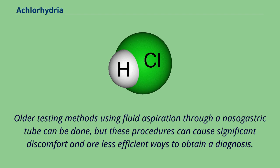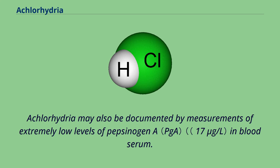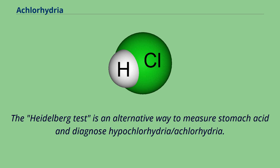Older testing methods using fluid aspiration through a nasogastric tube can be done, but these procedures can cause significant discomfort and are less efficient ways to obtain a diagnosis. A complete 24-hour profile of gastric acid secretion is best obtained during an esophageal pH monitoring study. Achlorhydria may also be documented by measurements of extremely low levels of pepsinogen A in blood serum, and the diagnosis may be supported by high serum gastrin levels. The Heidelberg test is an alternative way to measure stomach acid and diagnose hypochlorhydria or achlorhydria.